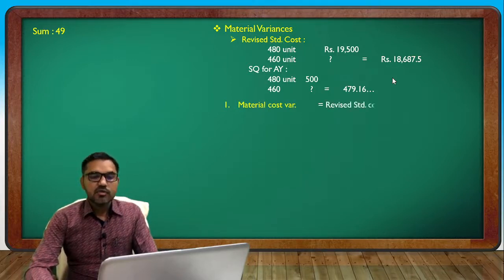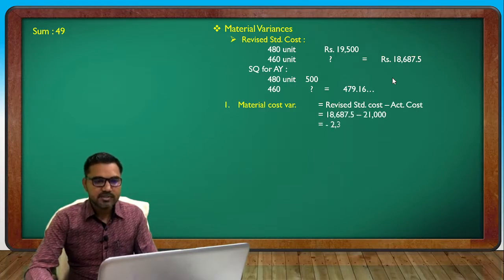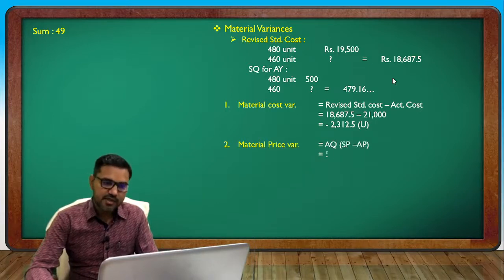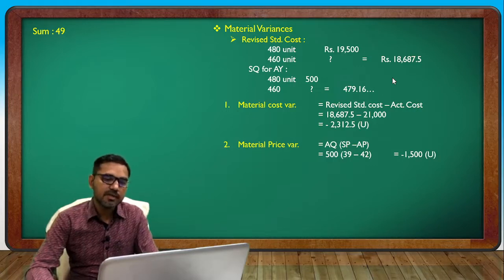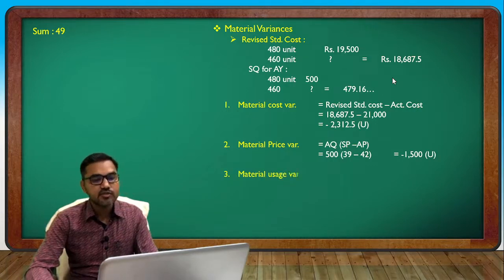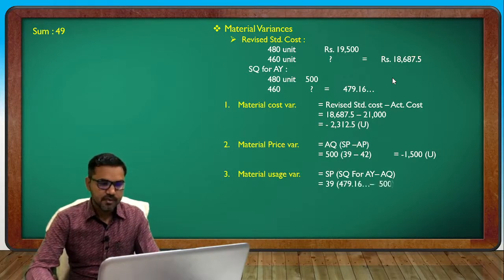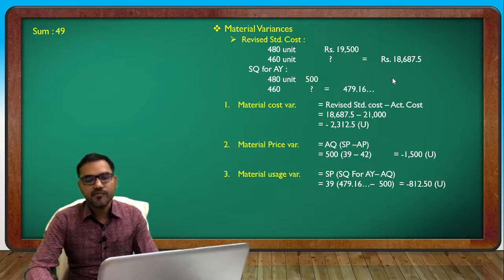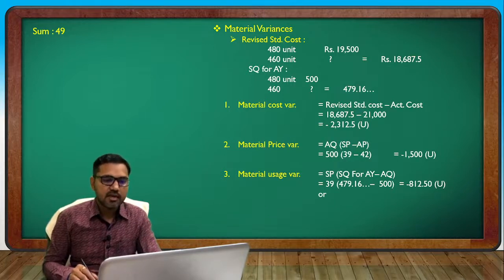Material cost formula: revised standard cost minus actual cost. Answer: 232. Price variance: 12.5 unfavorable. Actual quantity: 122 at 1-2.50.